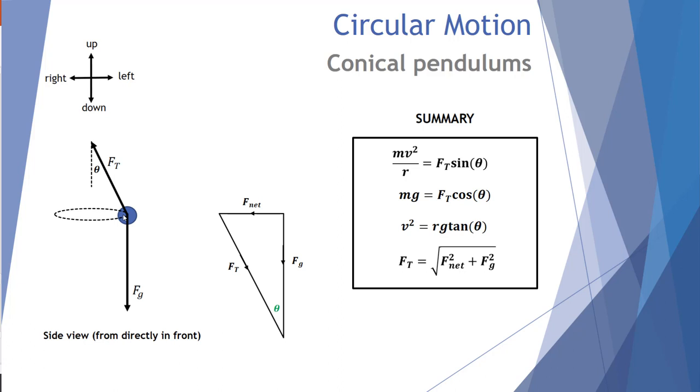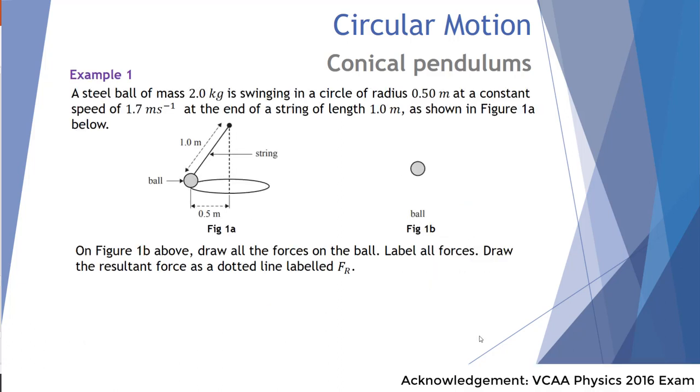Let's now apply this to an example. A steel ball of mass 2.0 kg is swinging in a circle of radius 0.50 m at a constant speed of 1.7 m/s, at the end of a string of length 1.0 m as shown in figure 1a below. On figure 1b above, draw all the forces on the ball, label all forces, and then finally draw the resultant force as a dotted line, labeled Fr.